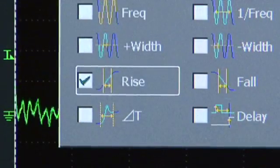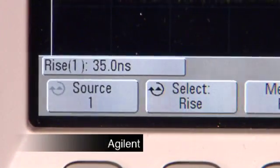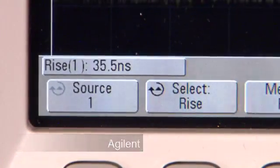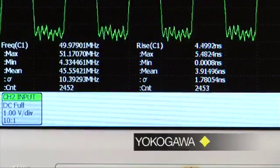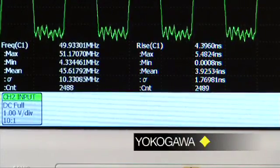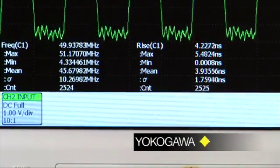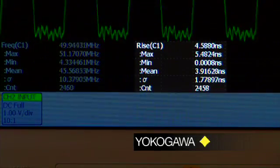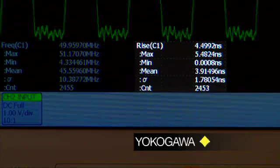Selecting rise time in both instruments, the Agilent unit can only display a basic snapshot. On the other hand, the DL-9000 gives you continuous statistics of the rise time measurement, including max, min, mean, and standard deviation over multiple acquisitions.